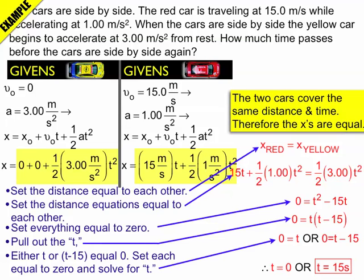So that makes sense. The two cars are side by side at T equals 0 seconds and they're side by side at the end of the race after 15 seconds. So that's the answer to the question, 15 seconds.